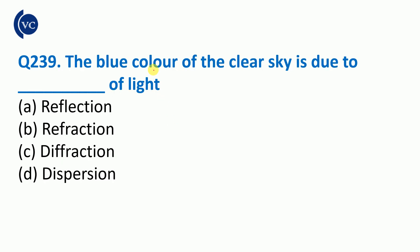Next question: the blue color of the clear sky is due to which phenomenon of light? We see the sky as blue because sunlight scatters off small particles in the atmosphere. The scattering of sunlight by small atmospheric particles causes the sky to appear blue.